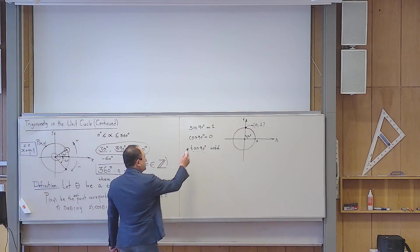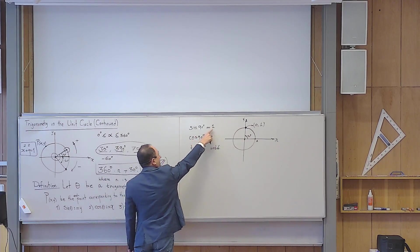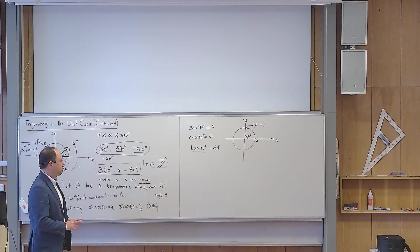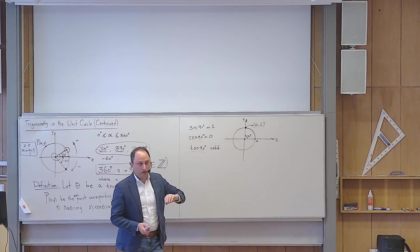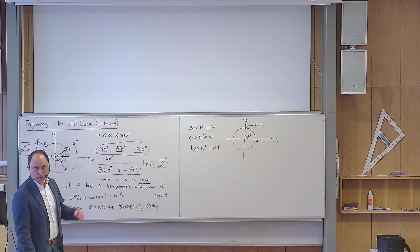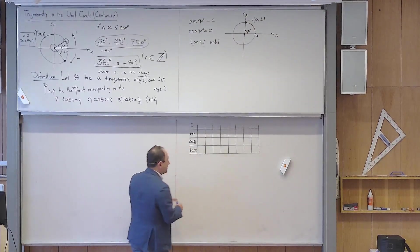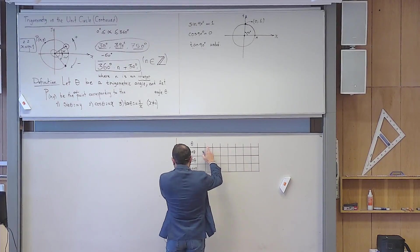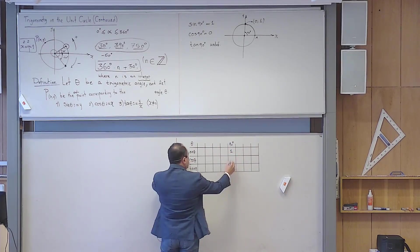This is why if you take your calculator and punch in tangent of 90 degrees, you will get an error message — it is undefined. By the way, if you have a calculator, it is extremely important to check that sine of 90 degrees gives you one. If you get one, you are in degree mode. If you get something else, you need to switch your calculator to degree mode. We will study radian mode later.